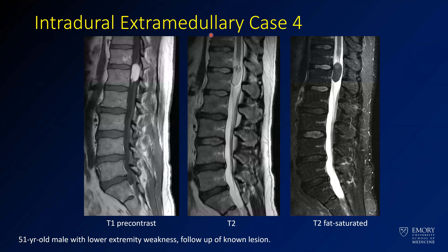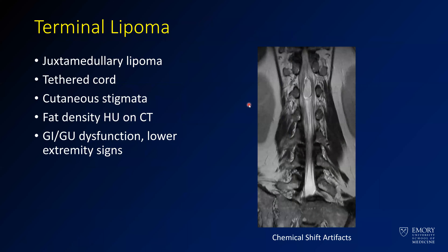Here's another intradural extramedullary lesion. This is T1 — the CSF is dark, but this lesion is very bright on both T1 and T2. When you apply fat suppression, it gets dark. There's also a chemical shift artifact around it on T2. This tells you you're dealing with a juxtamedullary lipoma — a lipoma of the conus, called a terminal lipoma. It can be associated with a tethered cord and cutaneous syndromes like port wine stains. These will suppress on fat-suppressed imaging, and you'll also see chemical shift artifact. On CT, they'll be fat density. A fatty filum is a single linear fat signal structure; when it becomes more mass-like, we call it a terminal lipoma.